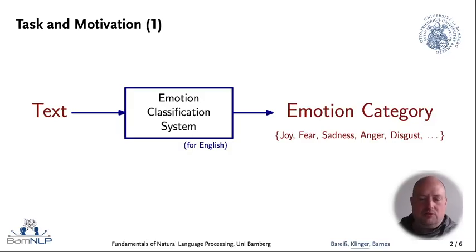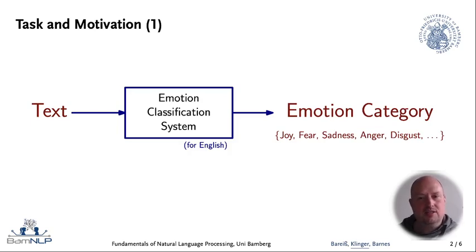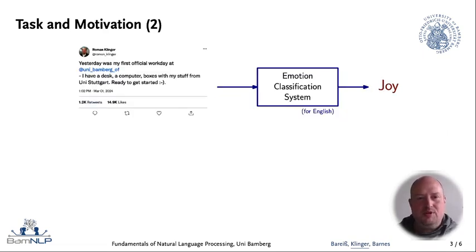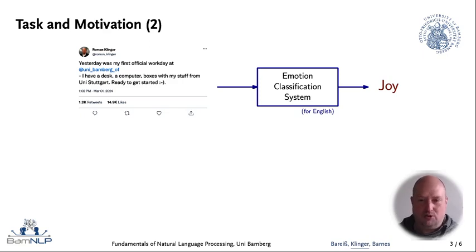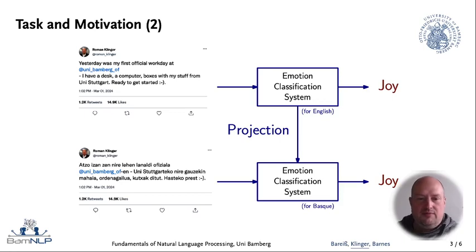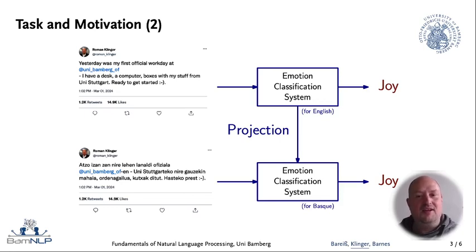We care about emotion classification, which means we would like to build systems that take some text as input and then output an emotion category, typically from a predefined set of emotions. As an example, we would take a tweet and put it into an emotion classification system that deals with the language of that tweet, and in this example it would output the emotion joy. If we have input in a different language than English, we would typically build an emotion classification system for that language.